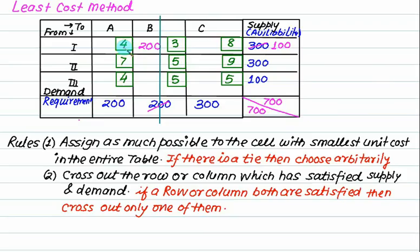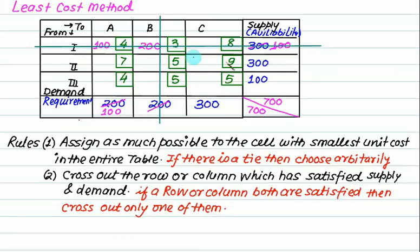The next cost is 4. You can allocate here at cost 4, and you can also allocate here at cost 4. If you select this 4, how much can you supply? 100 — cancel out. How much is left here? 100. Strike out this one. The next one is again cost 4, so how much can we allocate? 100. Cancel out.